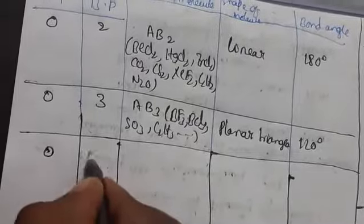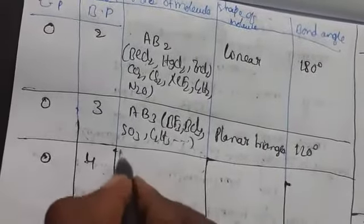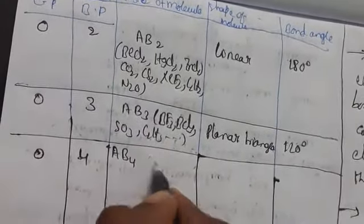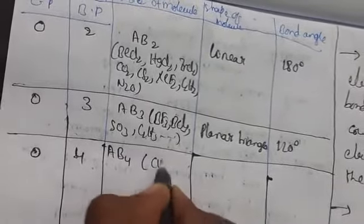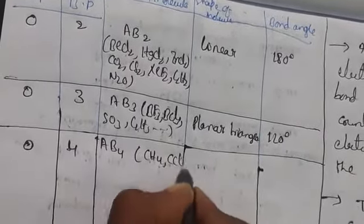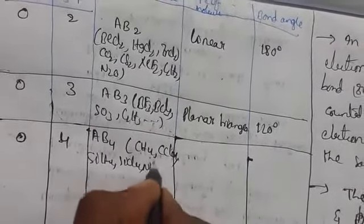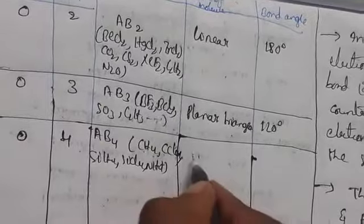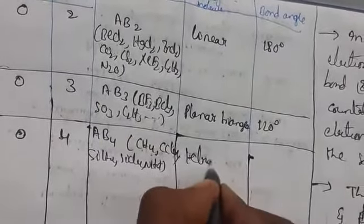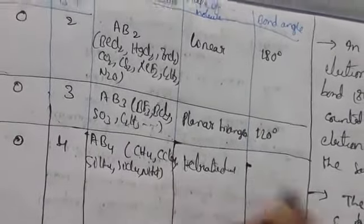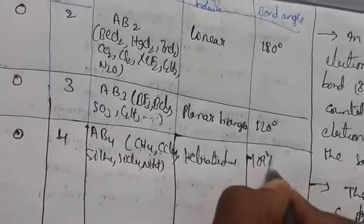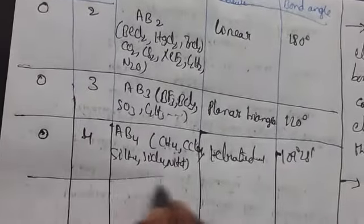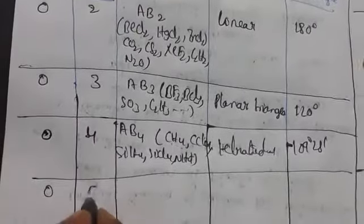With zero lone pairs and four bond pairs, the molecule type is AB4 and the shape is tetrahedral with a bond angle of 109°28'. Examples include CH4, CCl4, SiH4, SiCl4, and NH4+.